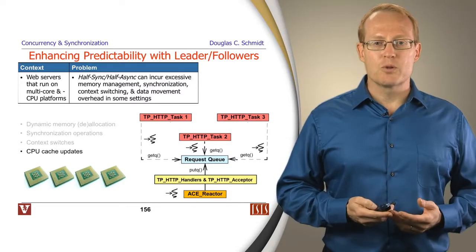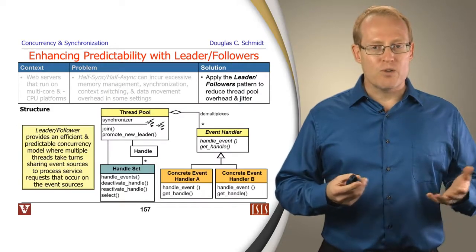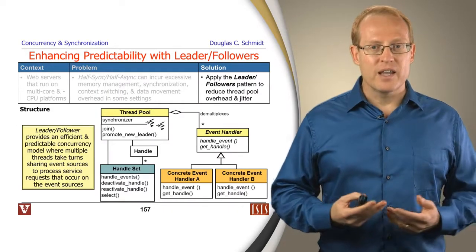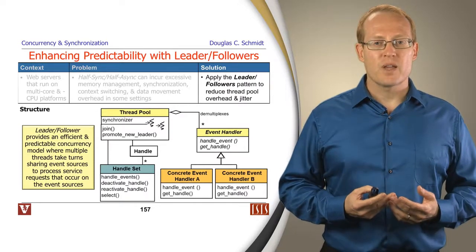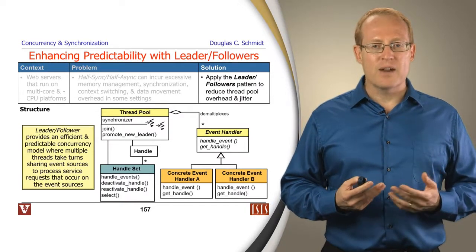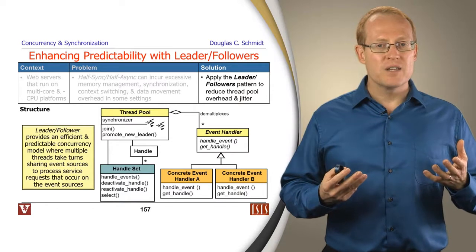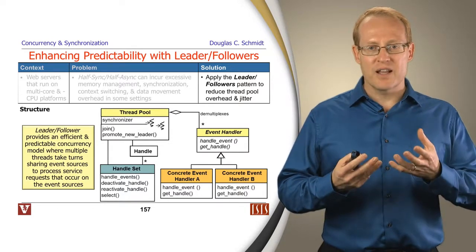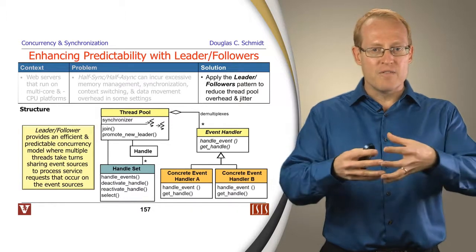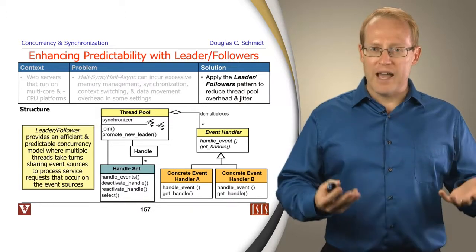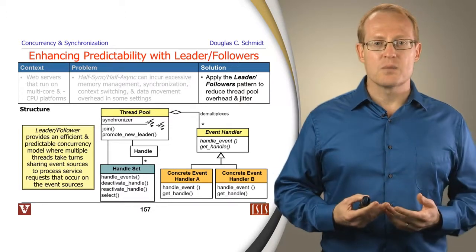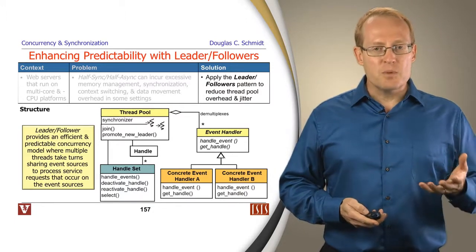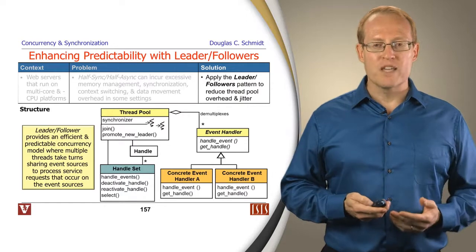So what can we do to address this problem? What we're going to describe is how to apply the leader-followers pattern to address this issue. Leader-followers is a pattern that allows a pool of threads to efficiently and predictably take turns accessing a lower-level set of event endpoints — things you might have with the select system call or the poll system call. This particular pattern is structured in a couple of ways we're going to talk about here.